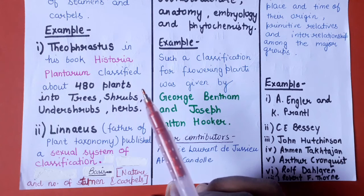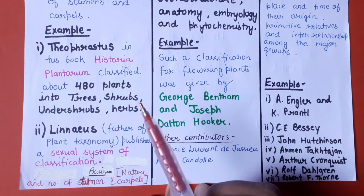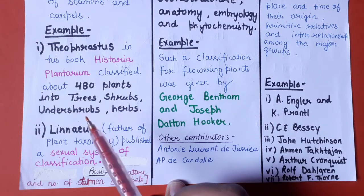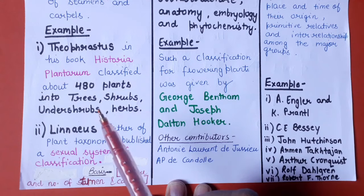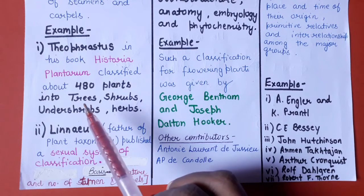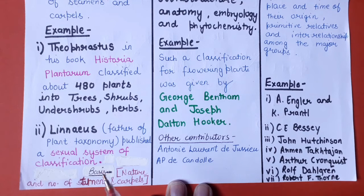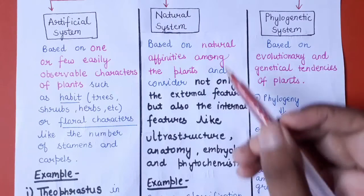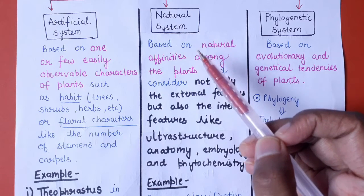In the artificial system of classification, authors considered only few external or basic characteristics to classify plants — like Theophrastus who used habit to classify plants into trees, shrubs, under-shrubs, and herbs, or Linnaeus who used floral characteristics like the nature of stamens and carpels. Now, coming to the next category — natural system of classification.